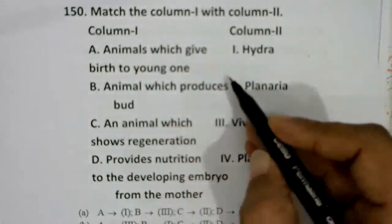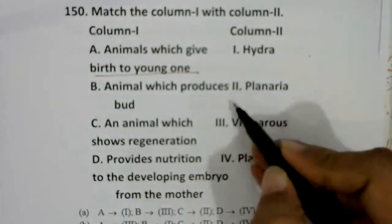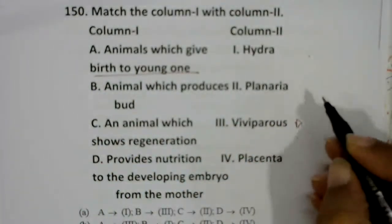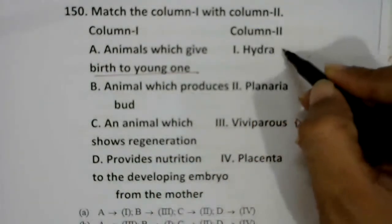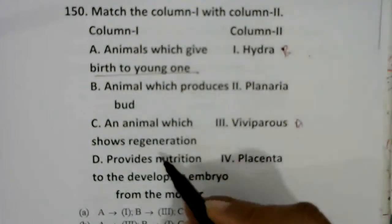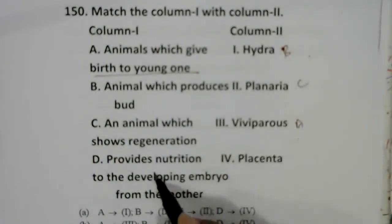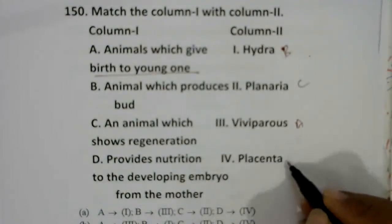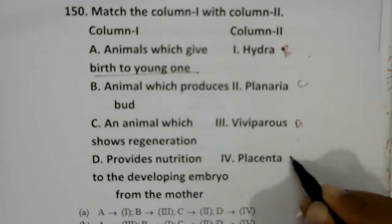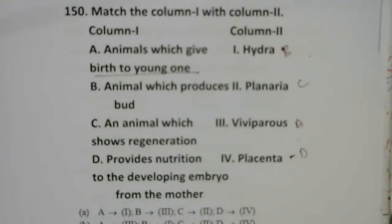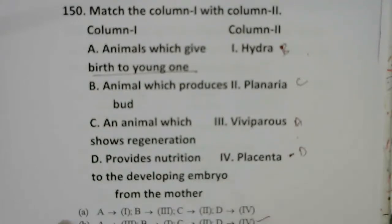Match column one with column two. Animals that give birth to young ones are called viviparous. Animals that produce buds — Hydra belongs to Coelenterata and shows budding. Animals showing regeneration — Planaria. Nutrition to the developing embryo from the mother is via the placenta. Answer: A3, B1, C2, D4 — option B.